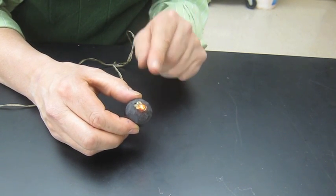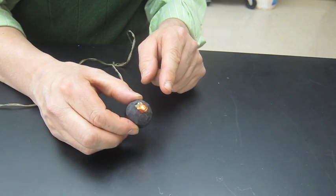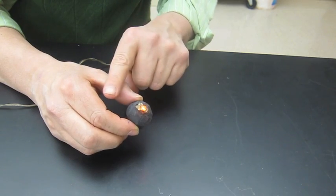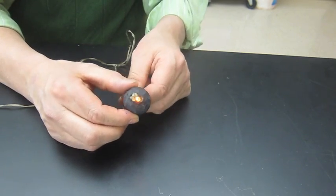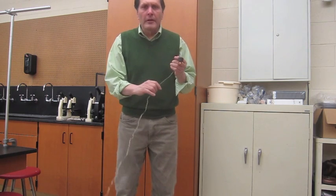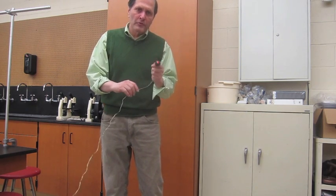So this bulb is not always on because the electrons are actually going in one direction, stopping, and then going back in the other direction. Now, let's try waving the neon light in the dark and see what its path looks like.